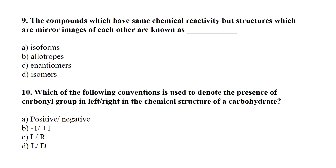The compounds which show the same chemical reactivity but have structures that are mirror images of each other are known as enantiomers. The convention used to denote the presence of a carbonyl group on the left or right in the chemical structure of a carbohydrate is L or D — L is for levo (left-hand side) and D is for dextro (right-hand side).